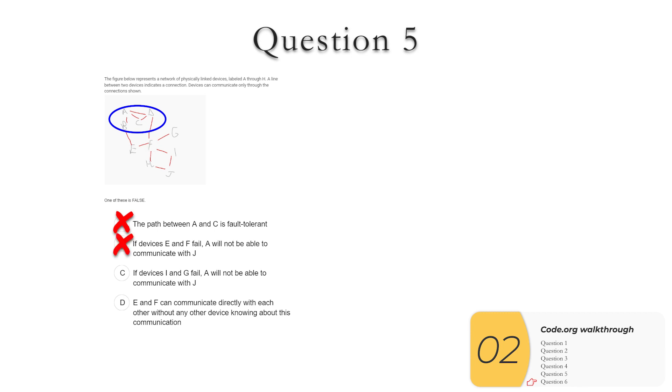C. If I and G fail, A will not be able to communicate with J. If those two fail, A is going to be able to communicate through J through A, B, E, F, H, J. So that's not true, and that is the answer that I'm looking for. Finally, looking at the last one, E and F can communicate directly, so nobody else needs to know about their communications. So this is a true statement, and that's not the answer I'm looking for.